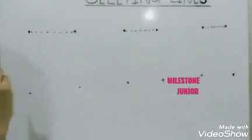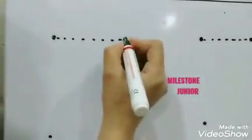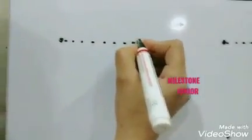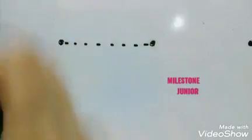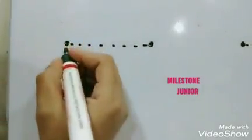For making a sleeping line, we need two dots. First dot, second dot.